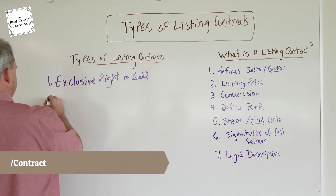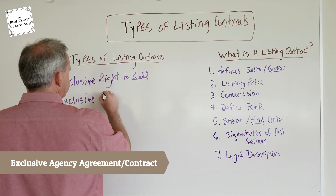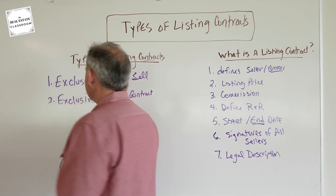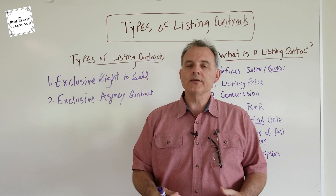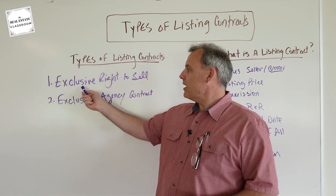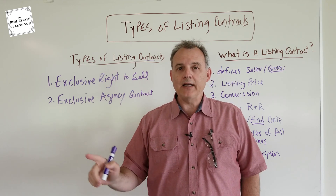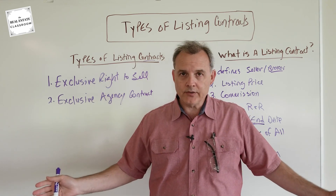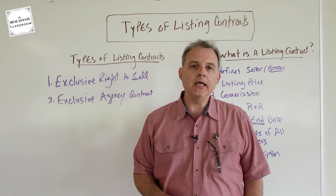The second type is what we call an exclusive agency contract. It looks a lot like the exclusive right to sell, but there is one difference: the seller reserves the right to procure their own buyer. So it's a partial exclusive right to sell. If the seller finds their own buyer, they don't pay a commission. But if a buyer is procured by any other means, then the broker is entitled to the agreed-upon commission listed in the listing contract.